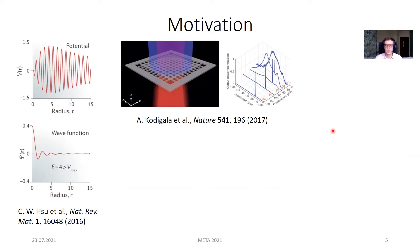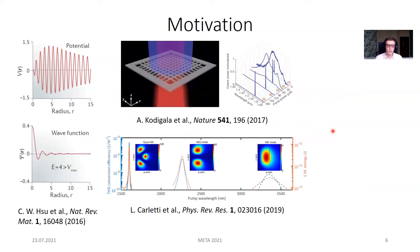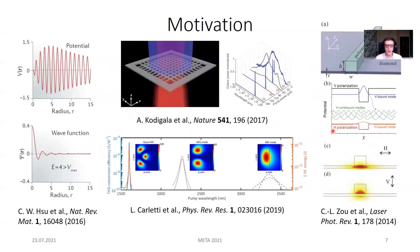In practice, BICs are typically revealed as extremely high Q resonances. Such resonances find many applications, mainly in optics, including enhancement of light-matter interaction for lasing, harmonic generation, efficient light guiding, et cetera.